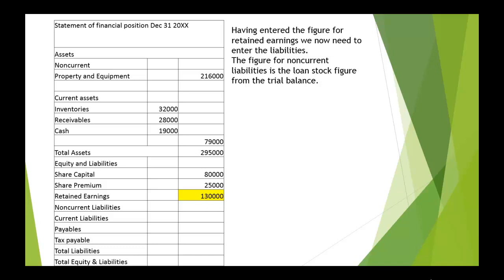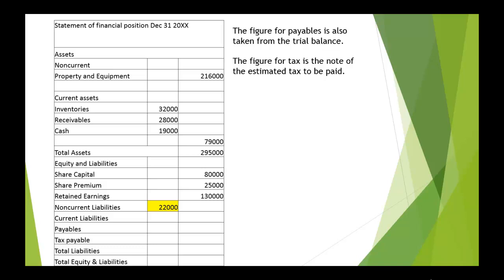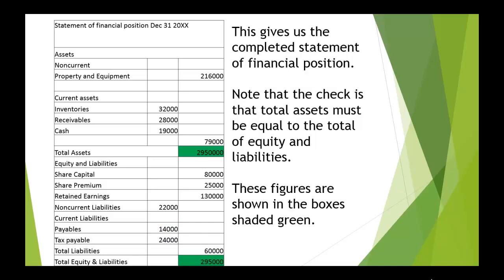Now we need to look at the liabilities. As a non-current liability, we've got the loan stock — 10% loan stock at 22,000. We've also got current liabilities, which include payables and tax payable. Our payables were 14,000, and our tax payable we estimated at 24,000. Adding up all our liabilities — 22,000, 14,000, and 24,000 — comes to 60,000. Adding up our equity and our liabilities, we get 295,000, and that matches the total assets.